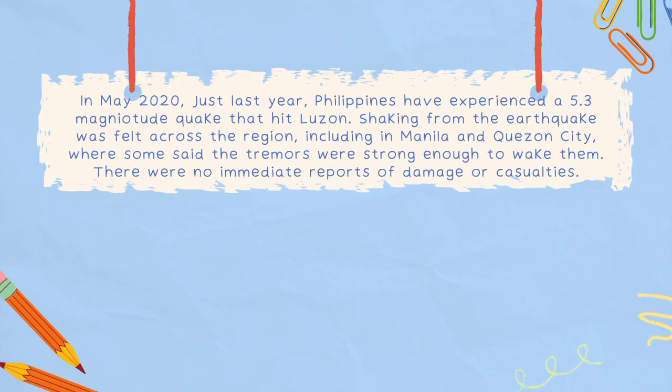In May 2020, just last year, the Philippines experienced a 5.3-magnitude quake that hit Luzon. Shaking from the earthquake was felt across the region, including in Manila and Quezon City, where some said the tremors were strong enough to wake them. Luckily, there were no immediate reports of damage or casualties.